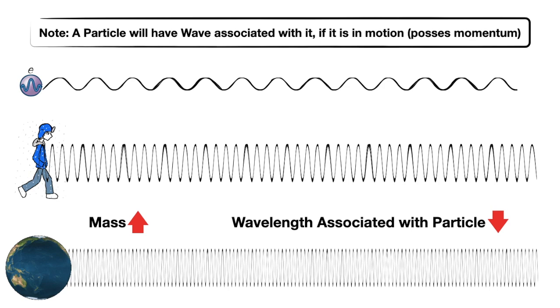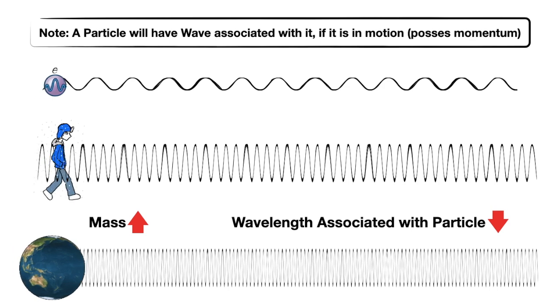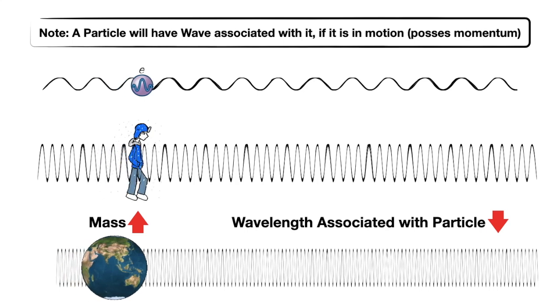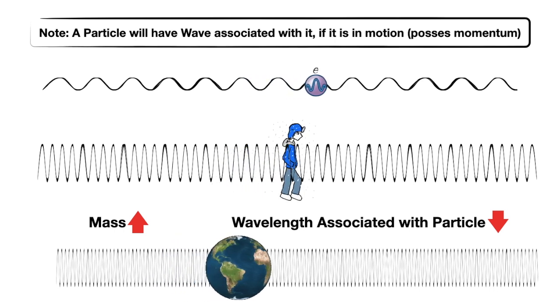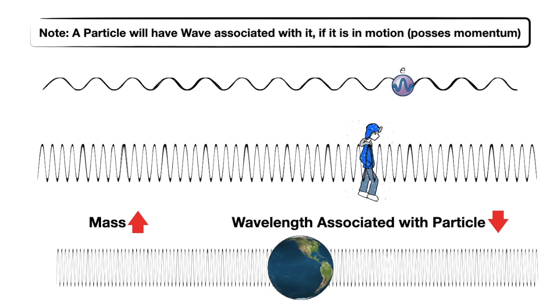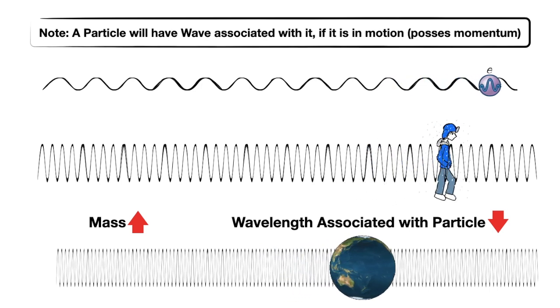Since light showed dual nature, the question arose: why not other particles? The reason is that as you increase the mass of a particle, the wavelength decreases, because wavelength is inversely proportional to mass in the de Broglie equation. For large bodies — like humans or heavenly bodies — the mass is huge, so the associated wavelength is too small to be detected. But for microscopic or subatomic particles with very small masses, the wavelength will have a considerable, measurable value. For electrons, as subatomic particles with a very tiny mass, a wavelength is indeed associated.